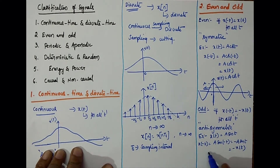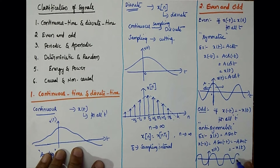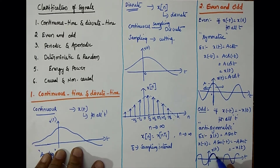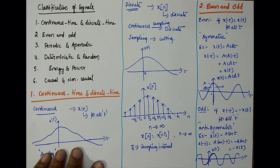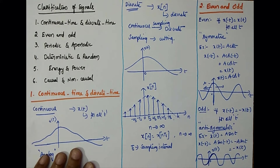Let me draw the plot. Looking at this half cycle — this is zero — this half cycle will appear in the negative portion. So this is called anti-symmetric nature. The odd signals are anti-symmetric about the zero axis.